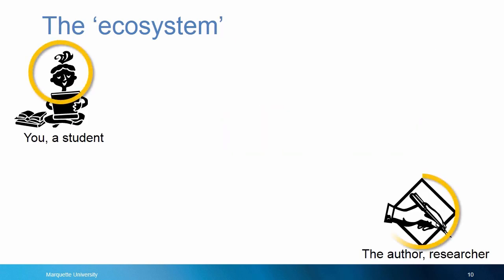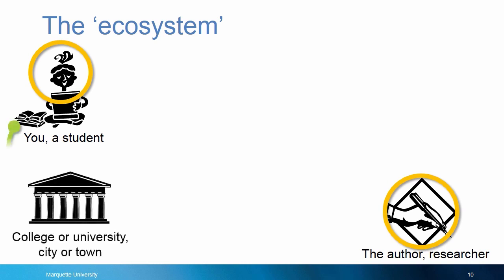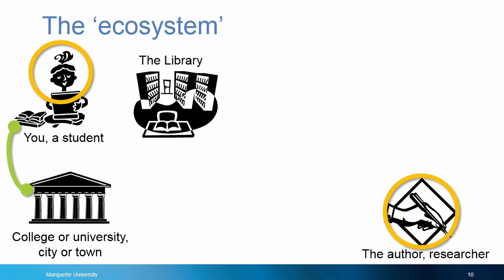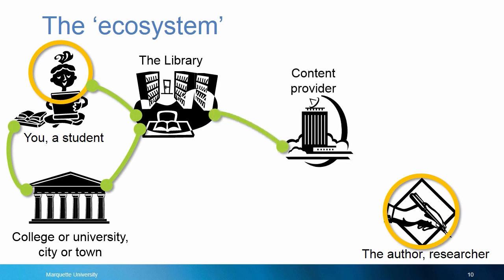Here's a flow chart of how this ecosystem works — a big picture view. There's you, the student. You are either enrolled at a university or a resident of a town. That gives you the right to use the library of that university or town. The library subscribes to databases of articles and books managed by content provider companies.